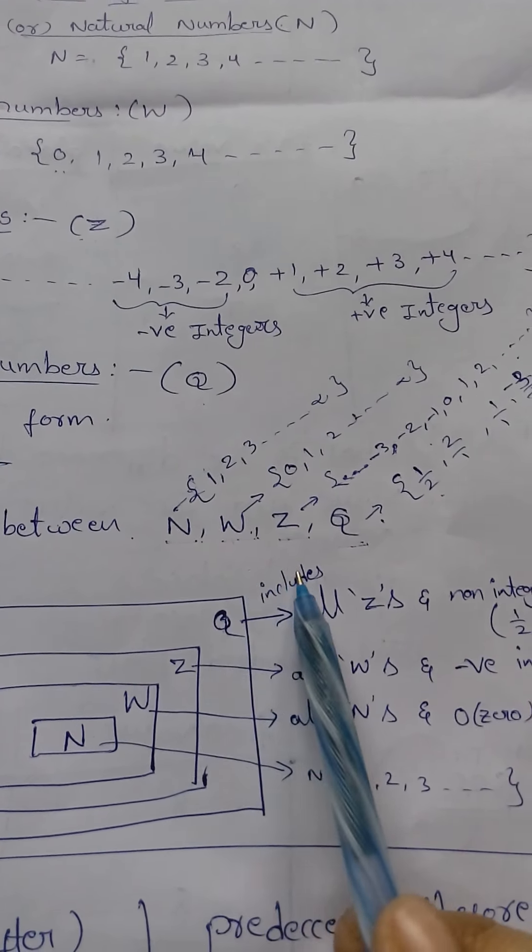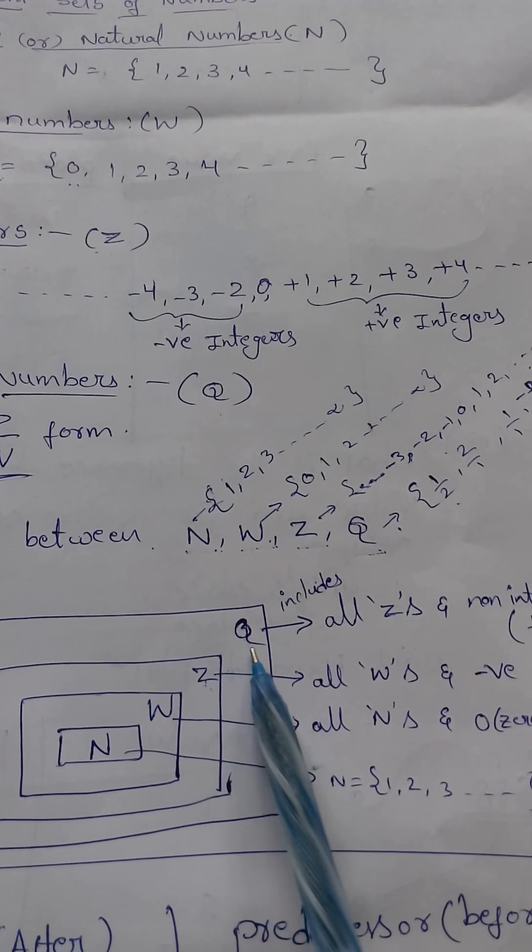Here Q means what? Rational numbers includes all Z. All Z means all integers and non-integral numbers such as 1 by 2, 2 by 7, minus 3 by 7, 8 etc.